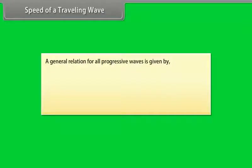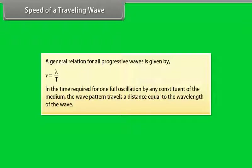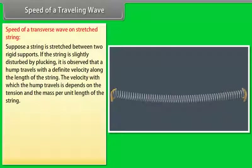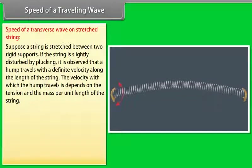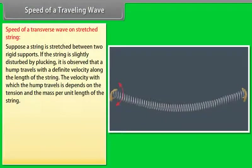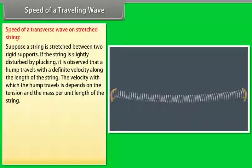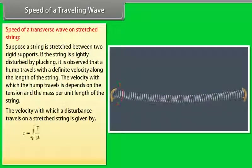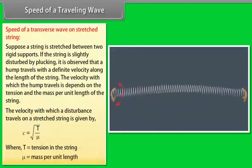Speed of a travelling wave: A general relation for all progressive waves is given by v = λ/T. In the time required for one full oscillation by any constituent of the medium, the wave pattern travels a distance equal to the wavelength of the wave. Speed of a transverse wave on a stretched string: Suppose a string is stretched between two rigid supports. If the string is slightly disturbed by plucking, a hump travels with a definite velocity along the length of the string. The velocity depends on the tension and mass per unit length of the string.